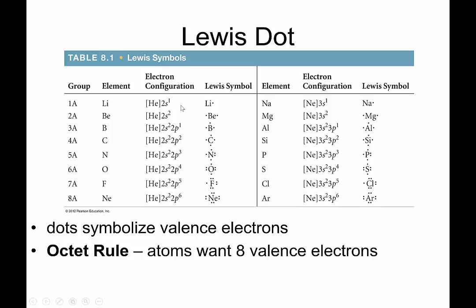So Lewis dot structures are based off the valence electrons. So if we have one valence electron, as in column 1, we get one dot. If we have five valence electrons, as in column 5, we would have five dots. Now the goal through bonding is to try to get an octet, or in other words have eight valence electrons. So these atoms are going to combine with one another in order to achieve that octet.